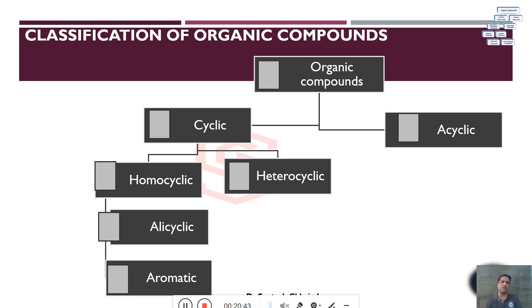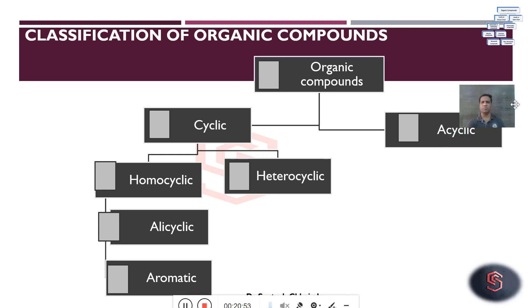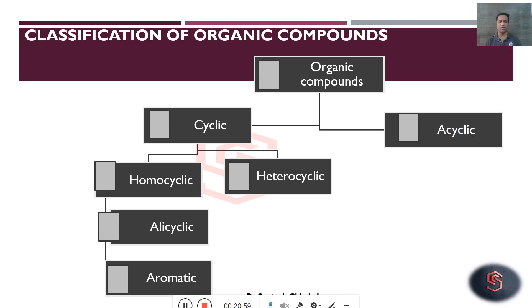Something very important is aromatic compounds. These are cyclic compounds, and earlier the name aromatic was given based upon the aroma they possess. But later, those compounds which contain a cyclic structure with alternate pi bonds and which obey Huckel's rule — cyclic, planar, and obeying Huckel's rule of aromaticity — are called aromatic compounds.